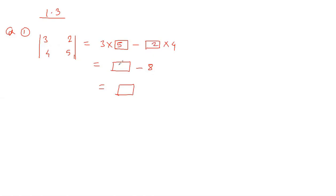So, 3 times 5 is 15, and 2 times 4 is 8. Then 15 minus 8 equals 7. This is our answer for question 1.